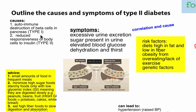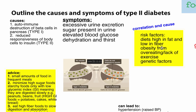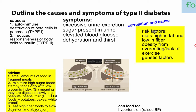Type 2 is more diet-related. We can all bring about Type 2 diabetes through overconsumption, causing the body to become less responsive to insulin. When glucose levels become chronically high, the body starts to treat that as normal. Some symptoms include excessive urination, sugar present in the urine, elevated blood glucose levels, and dehydration and thirst from excessive urination. Risk factors include diets high in fat or low in fiber, overeating, lack of exercise, and genetic factors — though a lot of this is correlation versus cause.